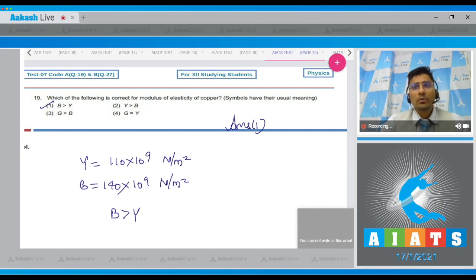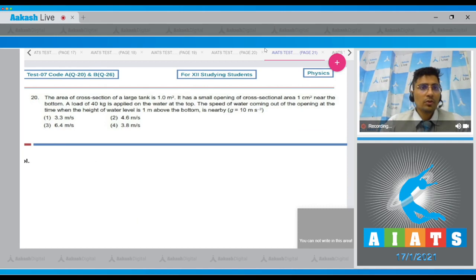Moving on to question number 20. Question 20 says the area of cross section of a large tank is 1 meter square. It has a small opening of cross sectional area 1 centimeter square near the bottom. A load of 40 kg applied at the water at the top. The speed of the water coming out of the opening at the time when the height of the water level is 1 meter above the bottom is nearly this. Let us draw a diagram.